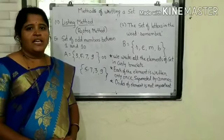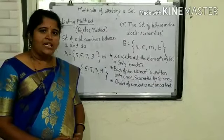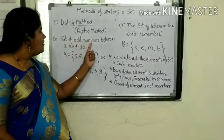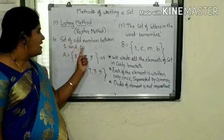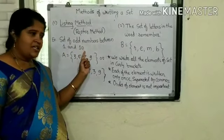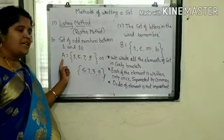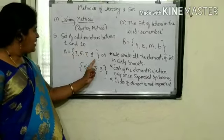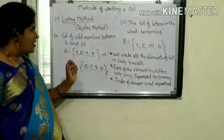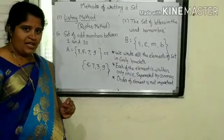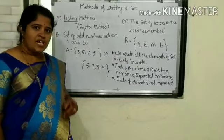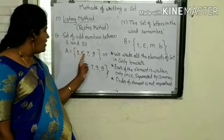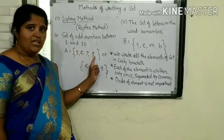Now, let us see an example of this method. Let us consider the first example: the set of odd numbers between 1 and 10. Let us give the name to this set as set A. Write the elements of the set in the curly bracket which are odd numbers between 1 and 10. The numbers which are odd between 1 and 10 are 3, 5, 7, 9.